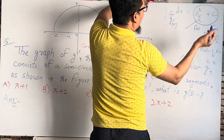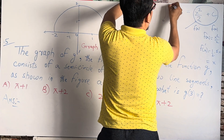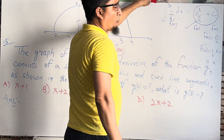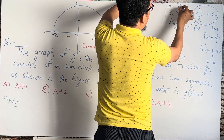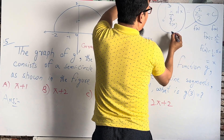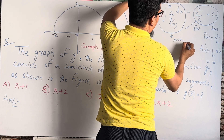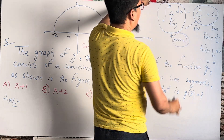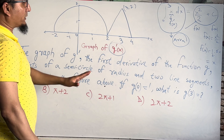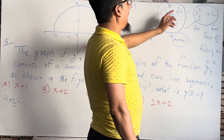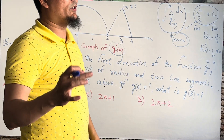Now let's talk about definite integration. For example, if I integrate from 0 to 3, this will give us a specific result — that result is the area. Do you remember the First Fundamental Theorem of Calculus?